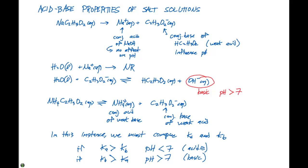But in our second example, if we have the conjugate acid of a weak base and the conjugate base of a weak acid, in order to figure out if it's going to be acidic or basic, we have to look at the Ka. If the Ka is greater than the Kb, the pH is going to be less than 7, and the solution is going to be acidic.